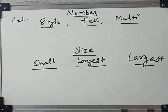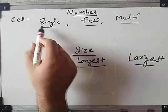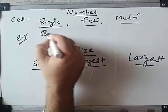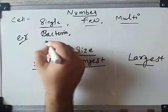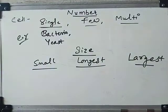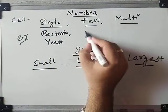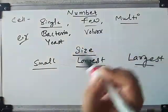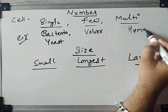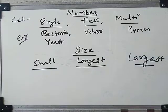What is the number of cells available in different organisms? Single-cell organisms do exist — examples include bacteria, yeast, and amoeba. For few-celled organisms we have examples like volvox or spirogyra, those kinds of algae. And multicellular organisms include human beings, plants, or any organism you can name that has many cells.